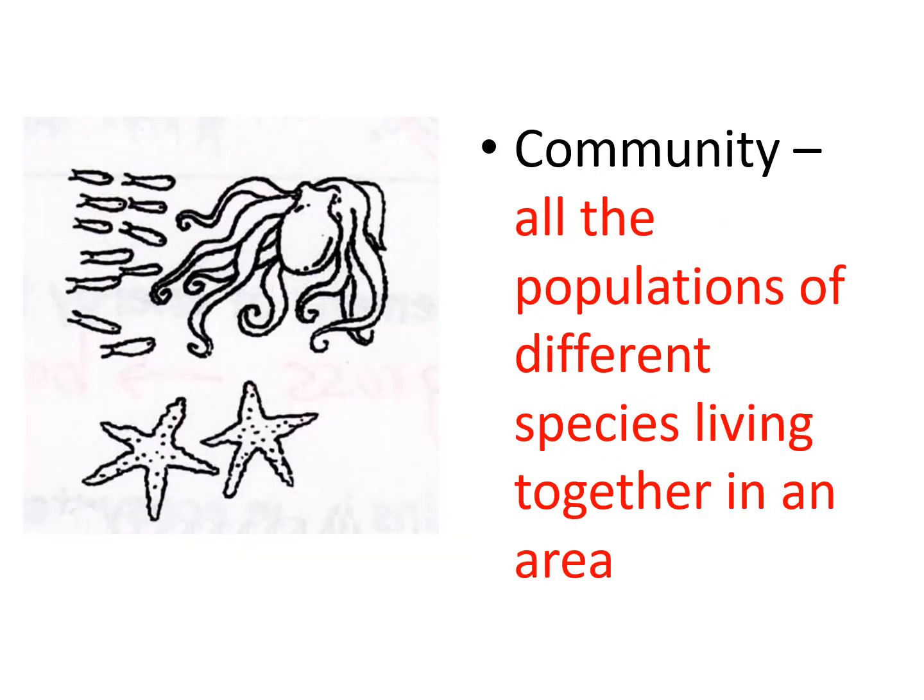A community is when I have different kinds of organisms living together. They're still living near each other, but now they could have predator-prey relationships or competitive relationships. Instead of being the same organism like in a population, I have different organisms, which make a community.